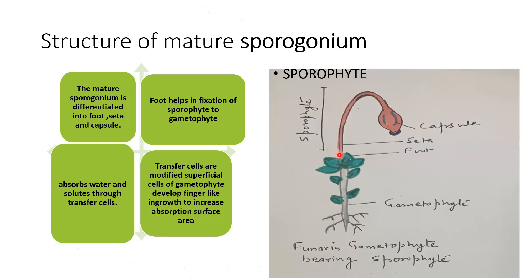A zygote, which is a diploid structure produced after fertilization, will undergo mitotic cell division and this will form the sporophyte.